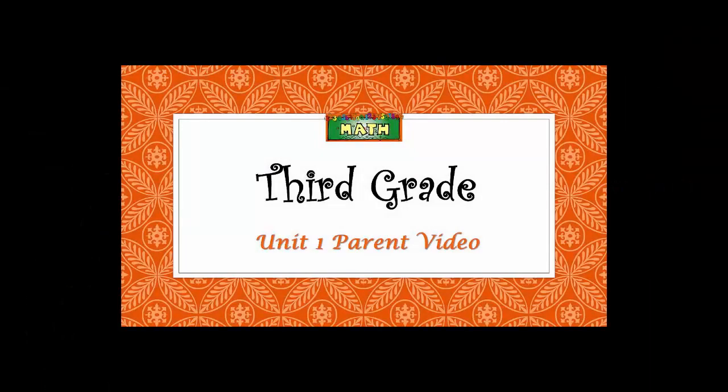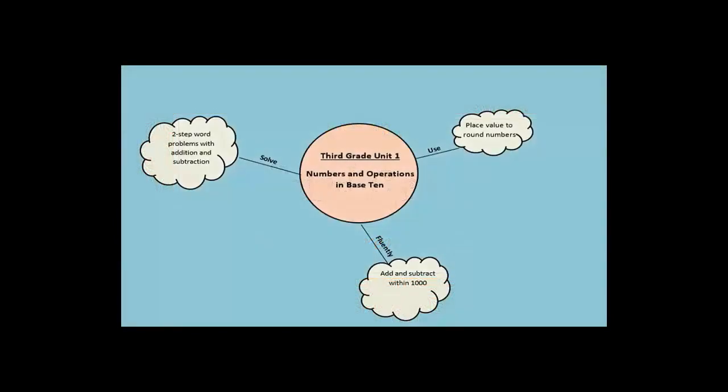Welcome to the 3rd Grade Unit 1 Numbers and Operations in Base 10 Parent Video. My name is Jamie Carberry. Here is a concept map with all of the topics that we are going to discuss in Unit 1. For this unit, students use place value to round numbers to the nearest 10 and 100, fluently add and subtract within 1000, and solve two-step word problems involving addition and subtraction.